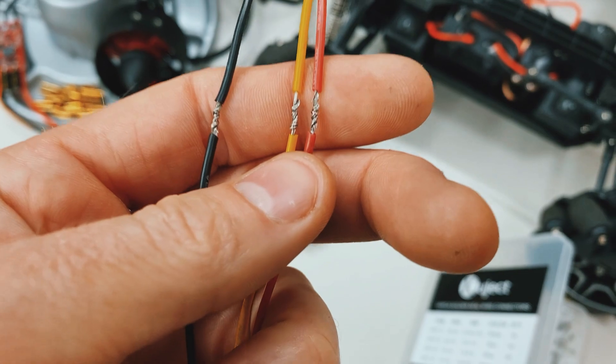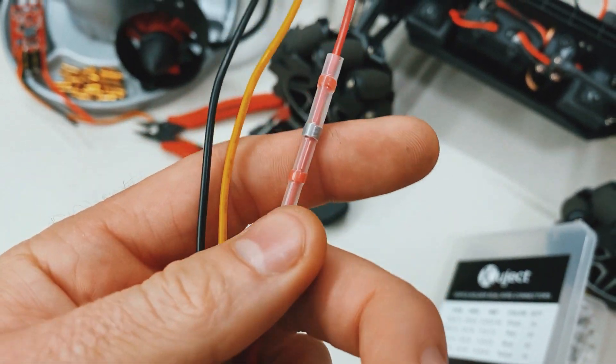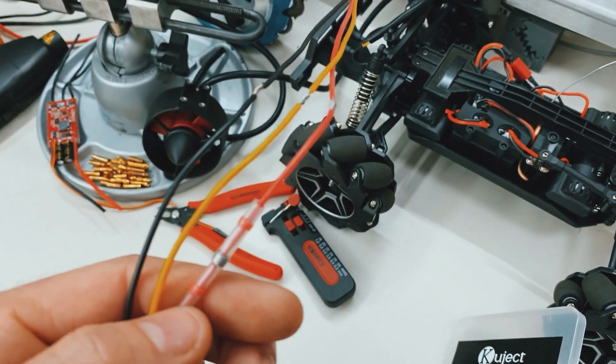So all you do is you strip your wires, you twist them together, and then you slide your tube over the joint and then apply heat. So I'll show you how I do that.